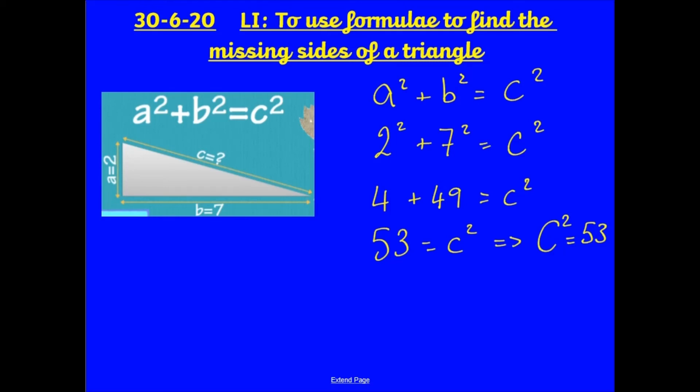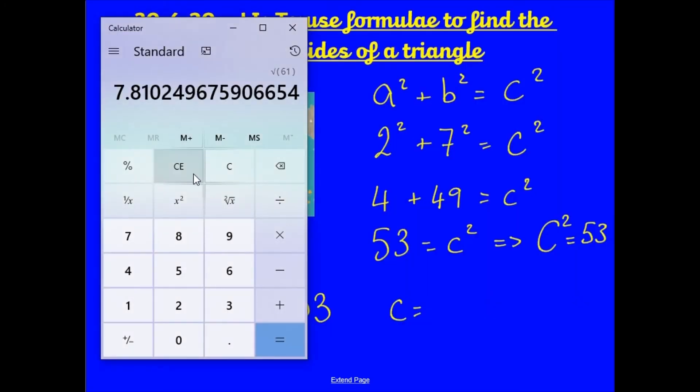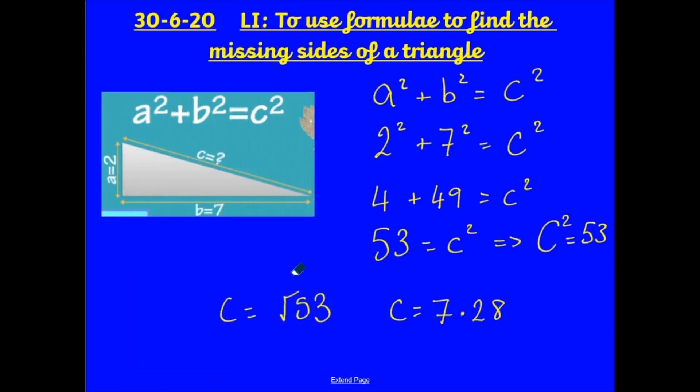So, if c² = 53, to find the value of c, I do the square root of 53. Now, remember, I said you can use a calculator for this today. So, c = the square root of 53. Bring up your calculator. And what I will do is 53, and then I press the square root button. And this is 7.28. The square root of 53 is 7.28. That means that c is 7.28 centimeters.